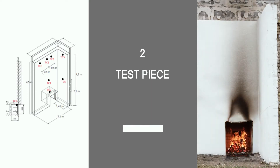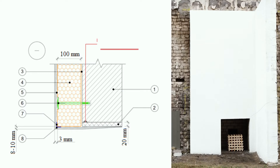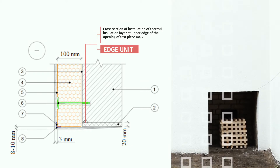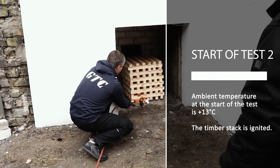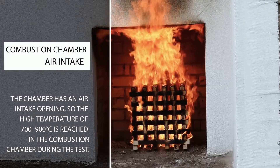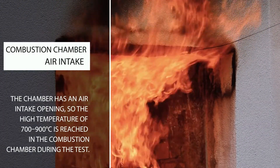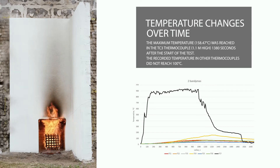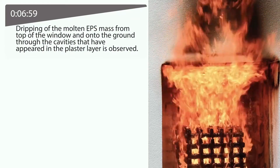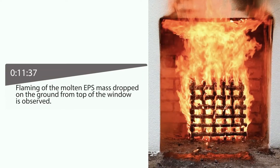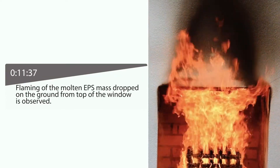Second test piece. The cross section of the thermal insulation layer at the upper edge of the opening of test structure number 2 is shown. The timber stack is ignited at the beginning of the test. Ambient temperature is +13°C. The combustion chamber temperature reaches 700 to 900°C during the test. The diagram shows that the highest temperature, above 158°C, is reached in thermocouple TC3. Almost 7 minutes after the start of the test, dropping of molten EPS from the top of the window is observed. After more than 11 minutes, flaming of the melted and dropped EPS mass is observed.